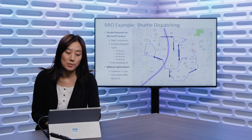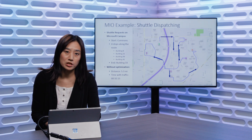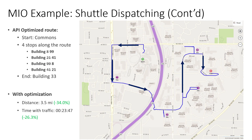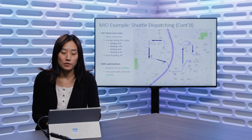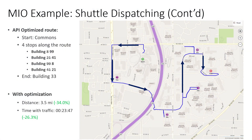Here is a route optimization scenario on Microsoft campus. A Microsoft shuttle starts from the commons building and makes four additional stops along the route to pick up and drop off passengers, and ends the route at building 33. Without the optimization, if the driver goes to the stops in sequence of the requests, the total travel distance will be 5.3 miles and it will take about 32 minutes to reach the final stop. Using the Multi-Itinerary Optimization API, the sequence of stops is reordered to optimize for travel time and distance, saving about 34% of the travel distance and 26% of the travel time.